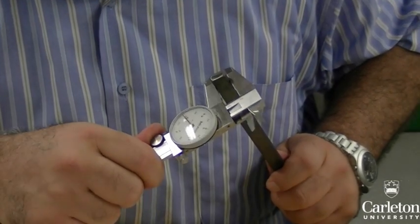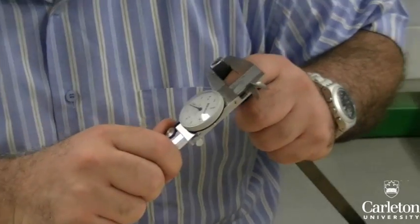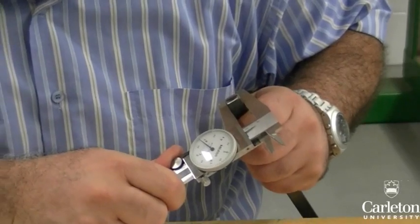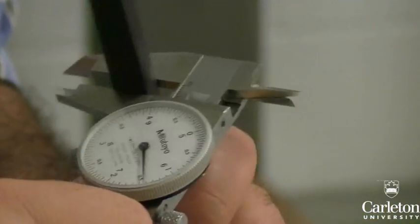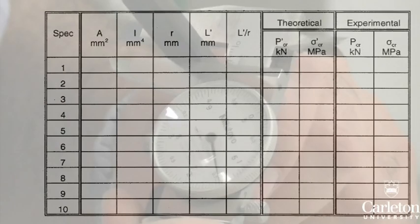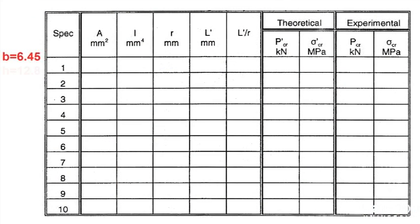The first step is to record the dimensions of each specimen. For each of the columns, measure and record the depth and thickness at three points along the length. Calculate the average of each set of three measurements, and then the cross-sectional area of each specimen.